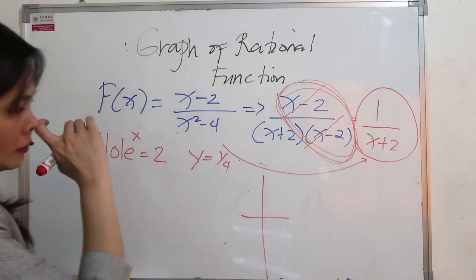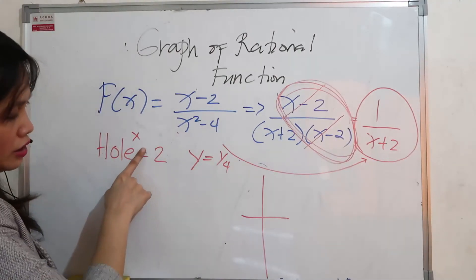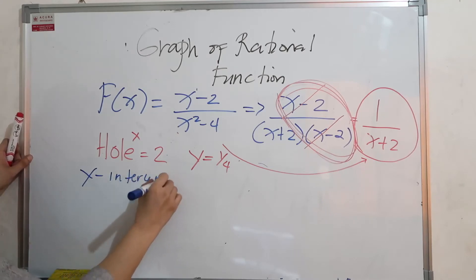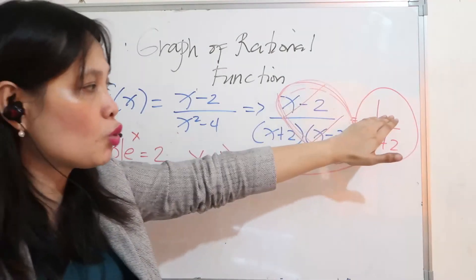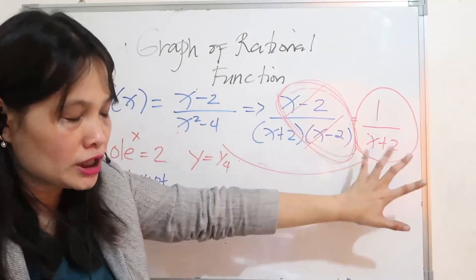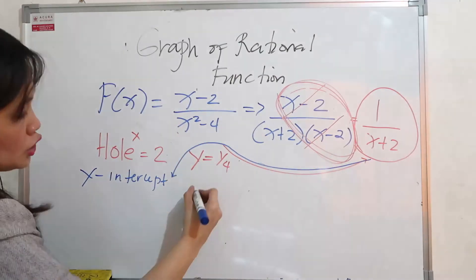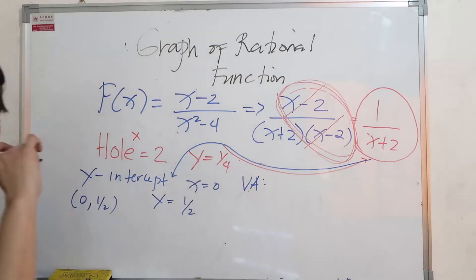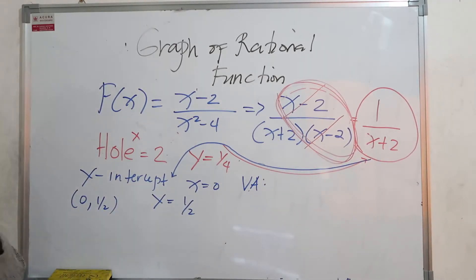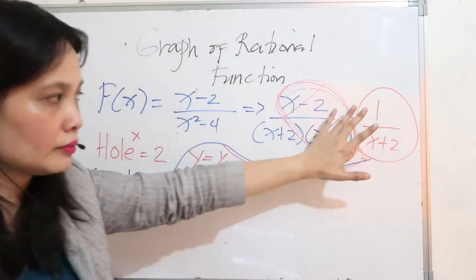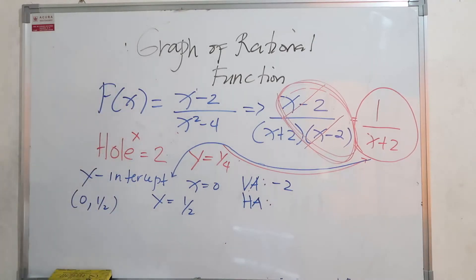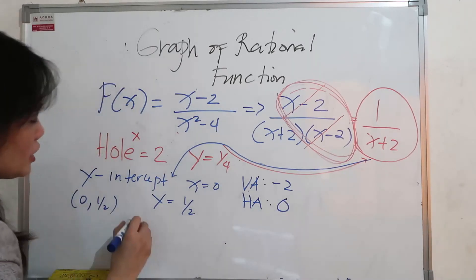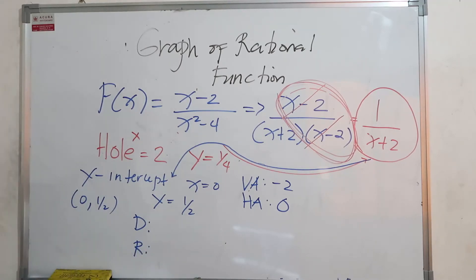Now working with the simplified function 1 over x plus 2: the y-intercept is found by setting x equals 0, giving y equals 1 half, so the y-intercept is at 0, 1 half. The vertical asymptote is the zero of the denominator: x plus 2 equals 0, so the vertical asymptote is x equals negative 2. Recall the conditions: degree of numerator is 0, degree of denominator is 1, so M less than N — horizontal asymptote is y equals 0.